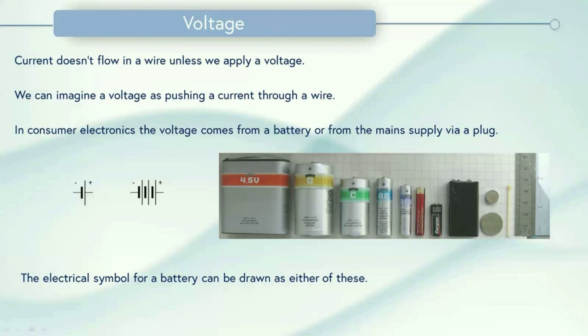The electrical symbol for a battery can be drawn as either of these. So technically this is the symbol for what's known as a cell, which is one part of a battery. So the single one is either used as a battery or as a cell, but a battery is in reality made up from many cells connected together, which is why you'll sometimes see a battery as the bigger symbol.